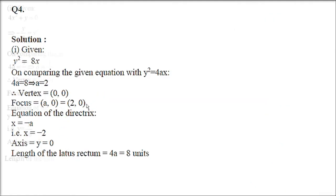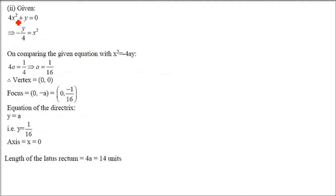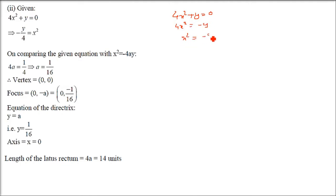Now the second part: 4x² + y = 0. We try to put it in standard form. The x² term goes on the left side, giving x² = -y/4. The coefficient of y is -1/4. We compare this with x² = -4ay, so -1/4 equals -4a.